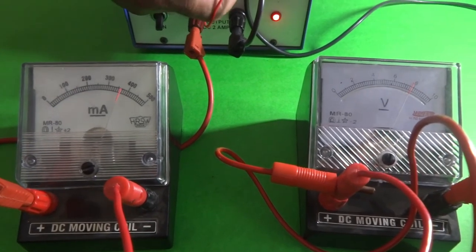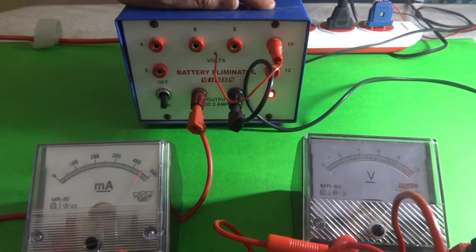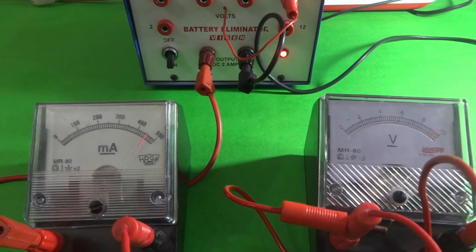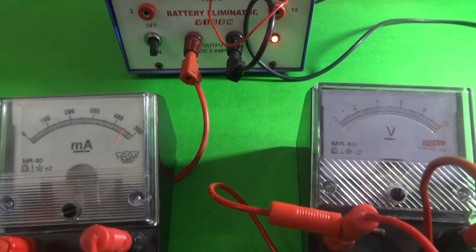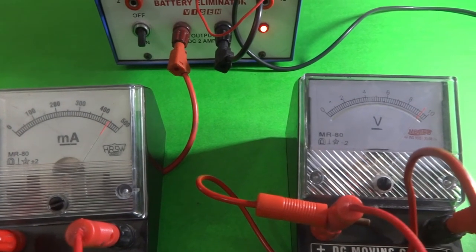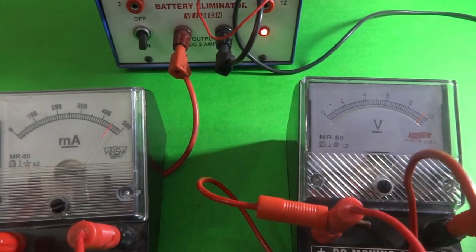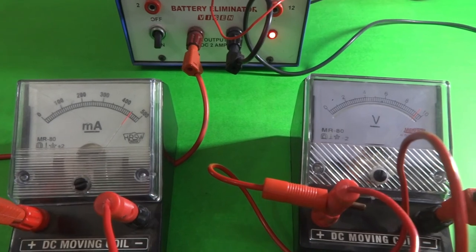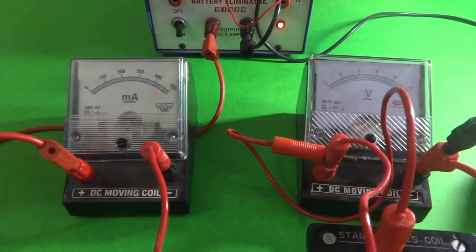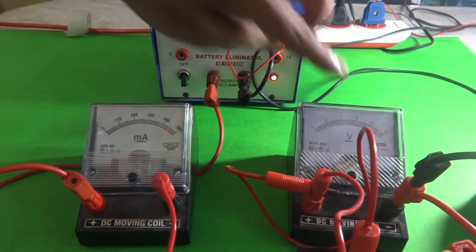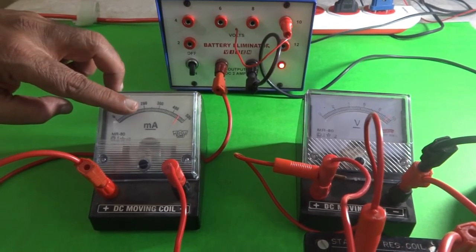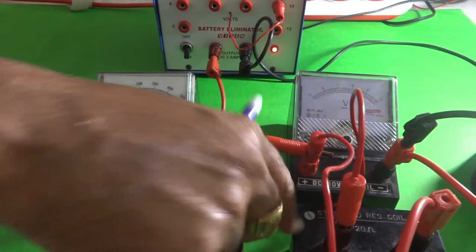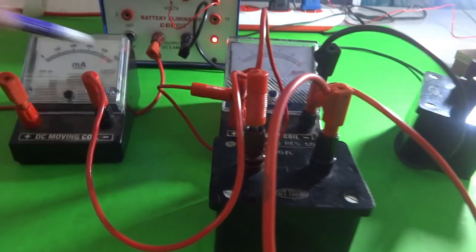Let us operate at 10 volts. Now it is 460 and there it is 9.2. Here in all the cases, what we have investigated is the ratio of the voltmeter reading to the milliammeter reading is always coming to be 20 ohms. In fact, I have connected here a 20 ohm resistance coil.